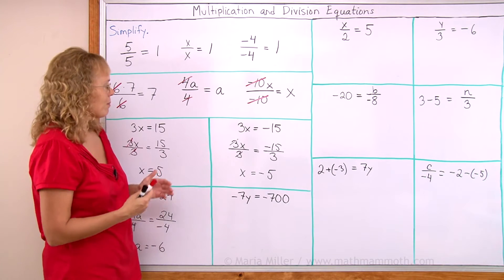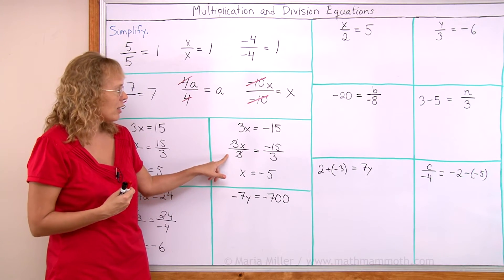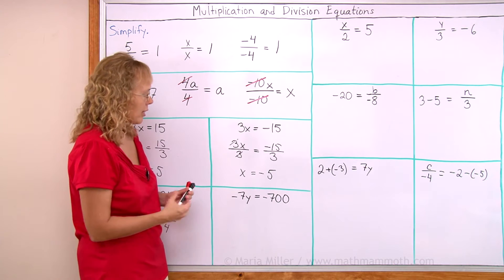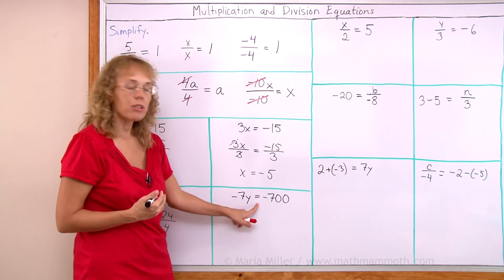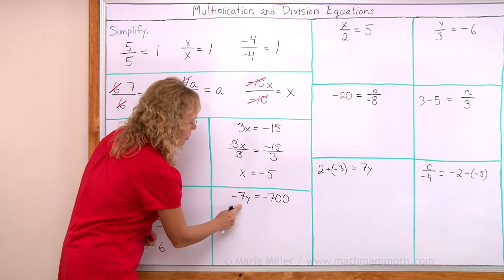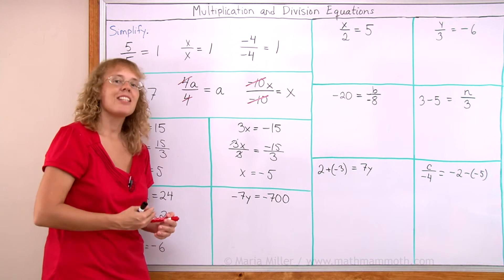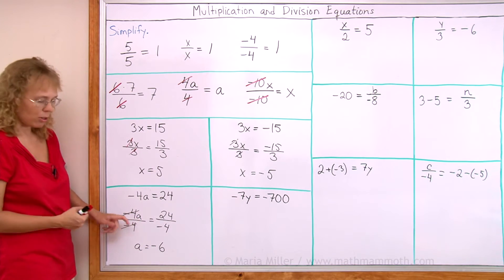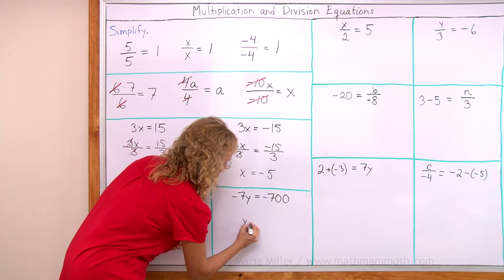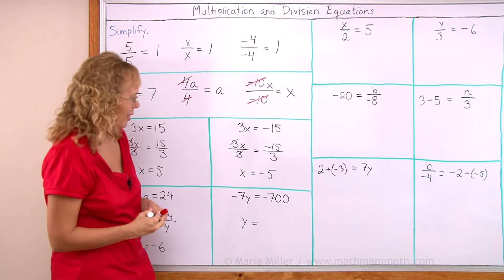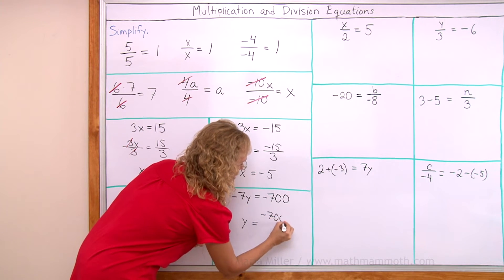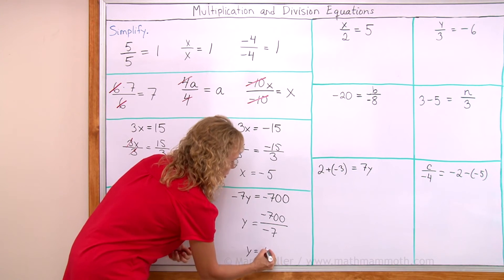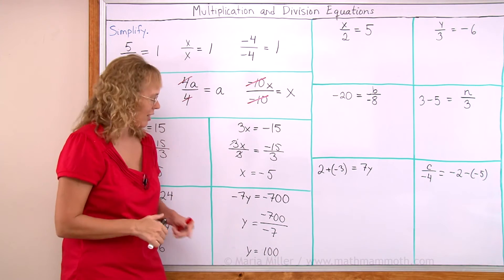Once you get used to this idea, once you get used to dividing both sides by the same number, then you can maybe use a shortcut and not write it out in its fullness. For example, here. Let me show you how I tend to do. Negative 7y equals negative 700. Y is multiplied by negative 7. So I need to divide by negative 7. Both sides. And then, of course, when I divide by negative 7, just like here, I'll get the variable alone. So I'll just write here that y equals. Okay? I simplify in my mind, so to speak. And then over here, I write negative 700 divided by negative 7. Now I calculate this. Y of course, equals now positive 100. Remember, negative divided by negative gives you a positive number.